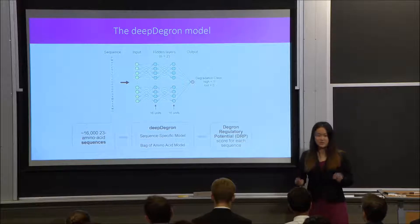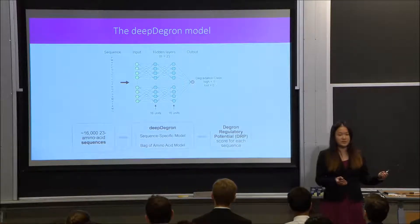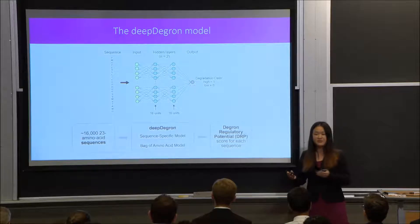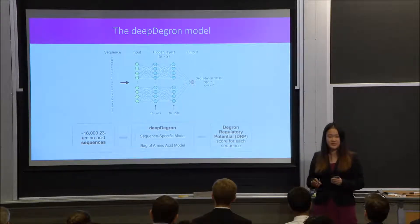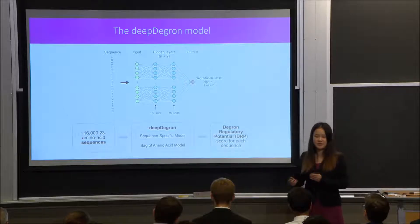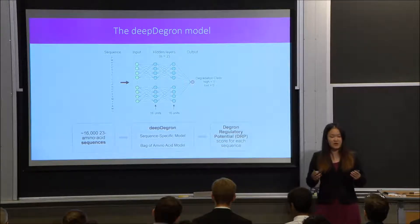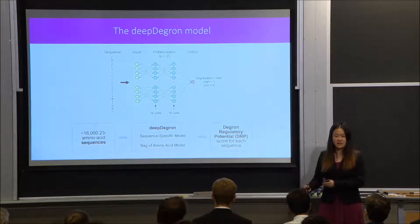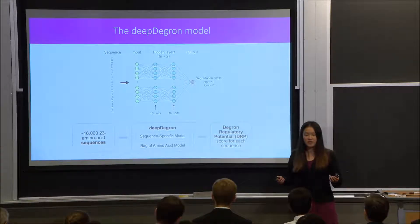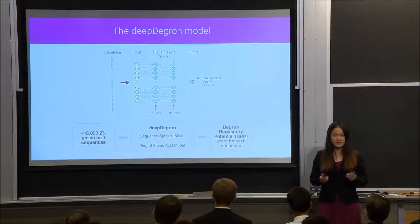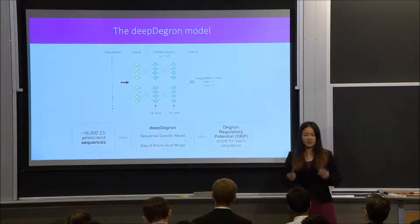To do this, we focused on the deep degron model. In previous research, the deep degron model was trained on 16,000 protein sequences, and after model training it achieved a 93% accuracy in predicting degron regulatory potential, abbreviated DRP. DRP basically represents how likely an input protein sequence is to contain a degron. Although deep degron achieved 93% accuracy, deep neural networks are black boxes and are very difficult to interpret, so we are unable to extract the protein sequence patterns learned by deep degron.